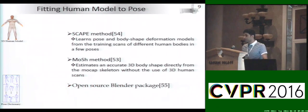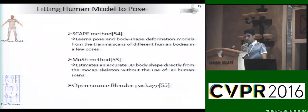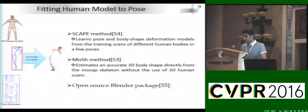The next step is fitting a human model to a pose. Several approaches have been proposed to fit a 3D human model to a pose. However, we use the open source Blender package. Given a 3D human model and mocap skeleton data, Blender normalizes the mocap skeleton data with respect to the skeleton data of the human model and then fits the model to the normalized mocap data.